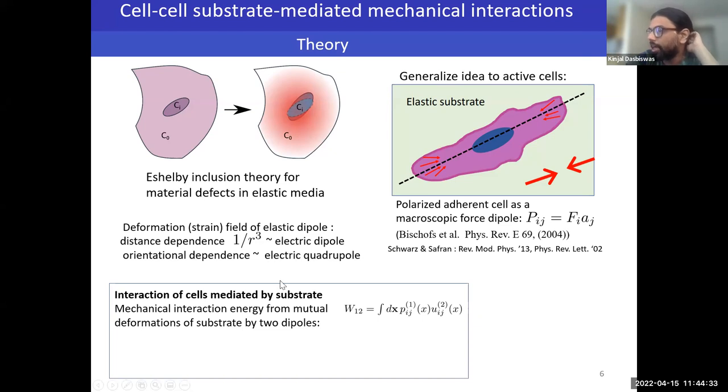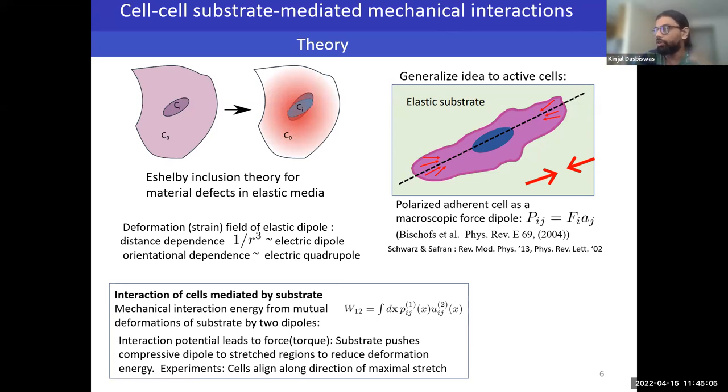As far as interactions are concerned, this gives this appealing idea that two dipoles which are mutually deforming the matrix can actually talk to each other through the matrix. That can be written down as a mechanical interaction energy, which is the coupling of the stress that is created by one dipole with the strain field that is created by the other dipole. Minimizing this potential will lead to some forces and torques on the dipole, which we can think of as the force that the substrate is pushing one dipole with in the presence of the strain of the other. Because these are compressive or contractile dipoles, they will tend to reduce the energy of the medium by going to regions that are stretched, where they can reduce the deformation energy. This is basically an analog for what really happens in experiments, which is that cells will align their long axis along the direction of maximal stretch.